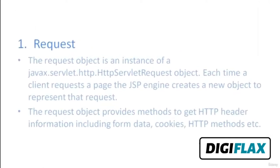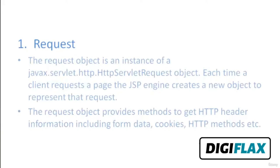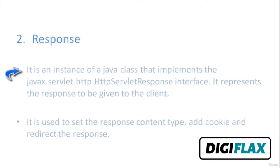The request implicit object is an instance of javax.servlet.http.HttpServletRequest. Each time a client requests a page, the JSP engine creates a new object to represent that request. The request object provides methods to get HTTP header information including form data, cookies, and HTTP methods. The response implicit object is an instance of a Java class that implements the javax.servlet.http.HttpServletResponse interface. It represents the response to be given to the client and is used to set the response content type, add cookies, and redirect the response.